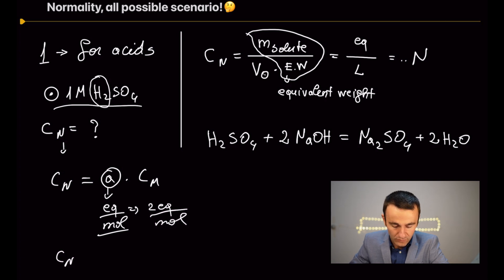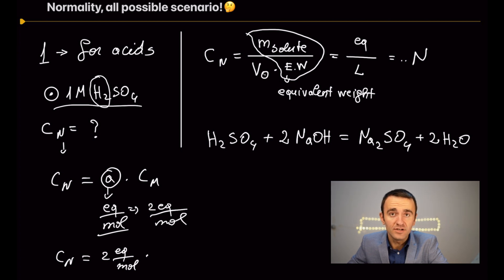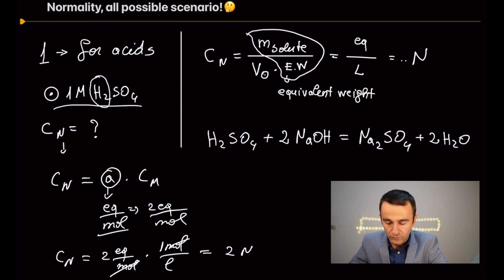So the normality of this solution is two equivalents per mole — because it contains two hydrogens — multiplied by its one molar concentration. Molar concentration is number of moles per liter, so moles cancel and we get two normal.